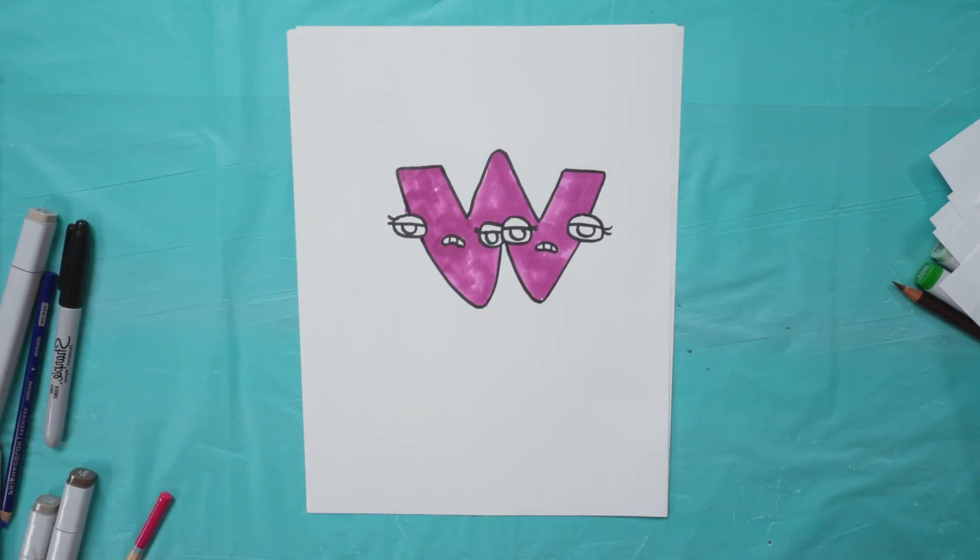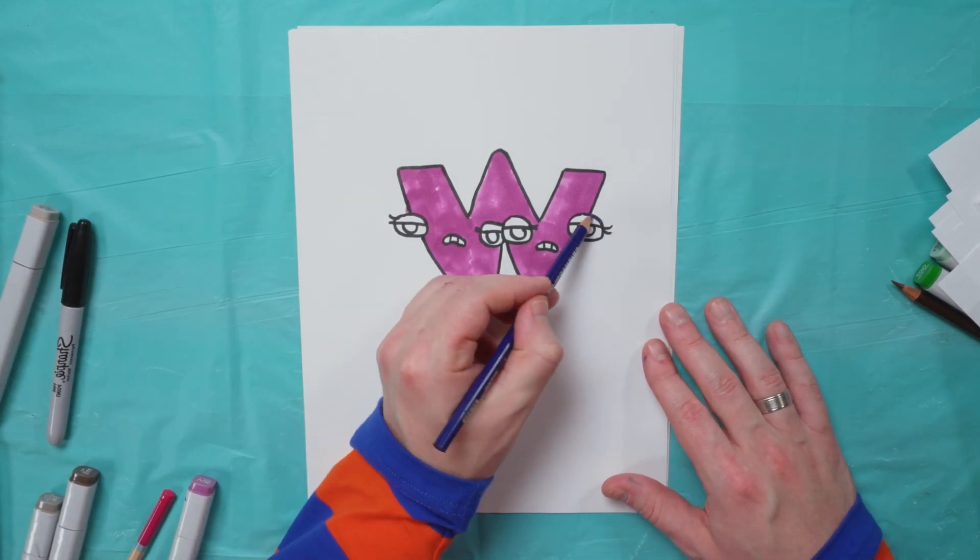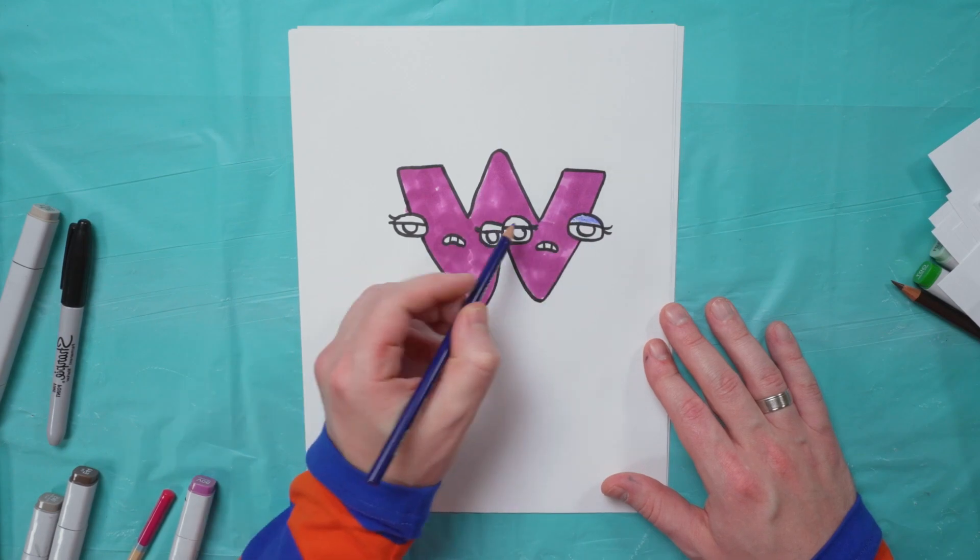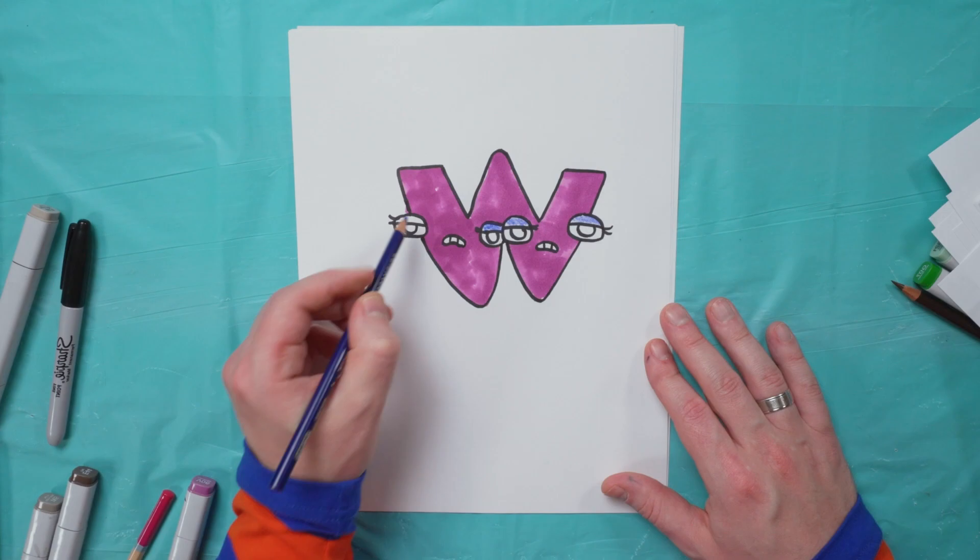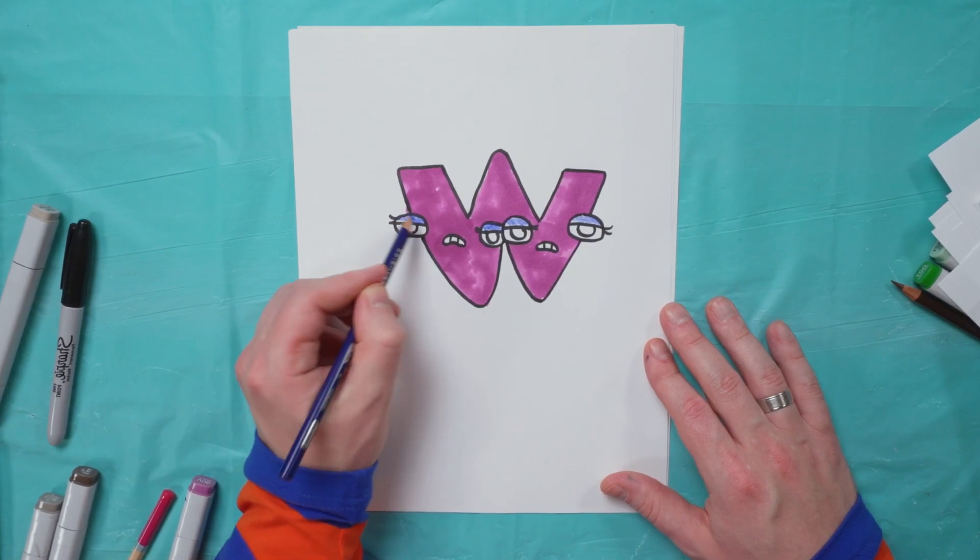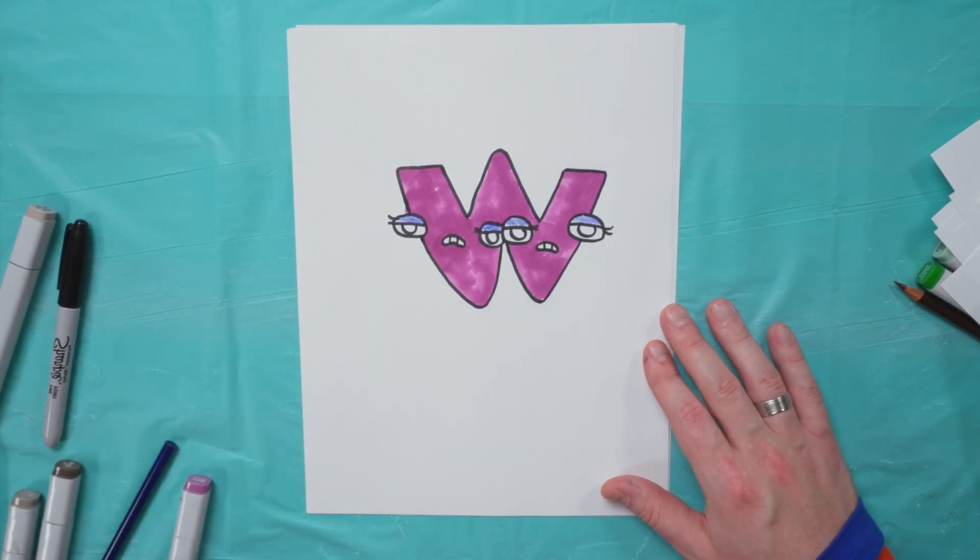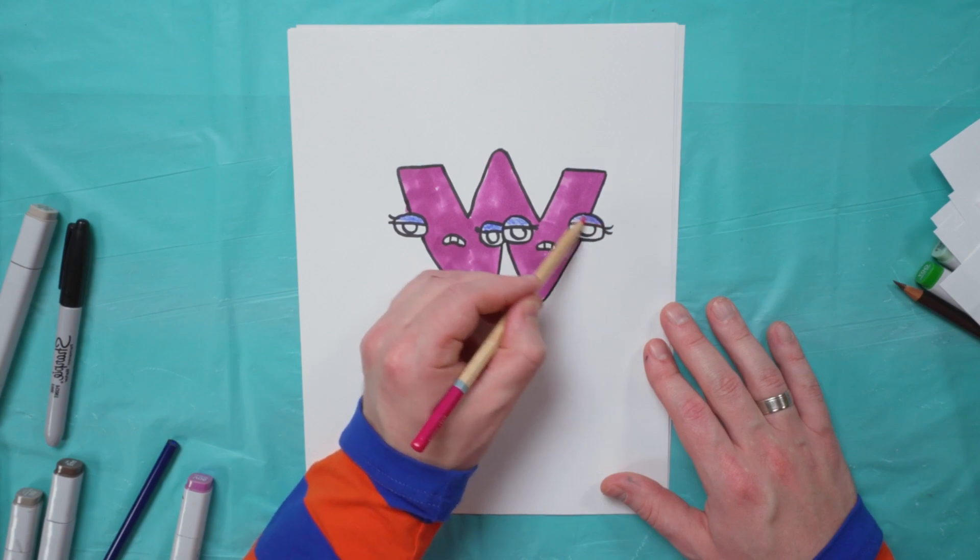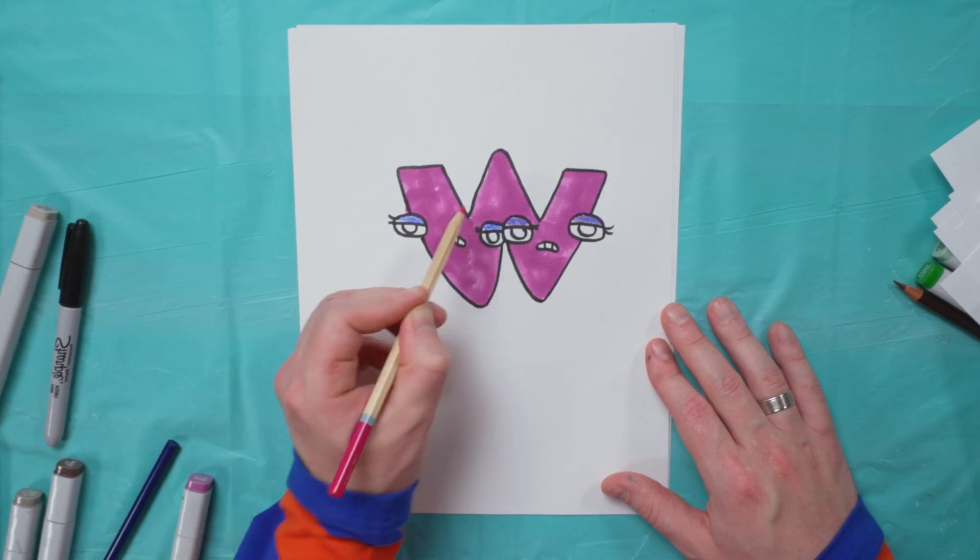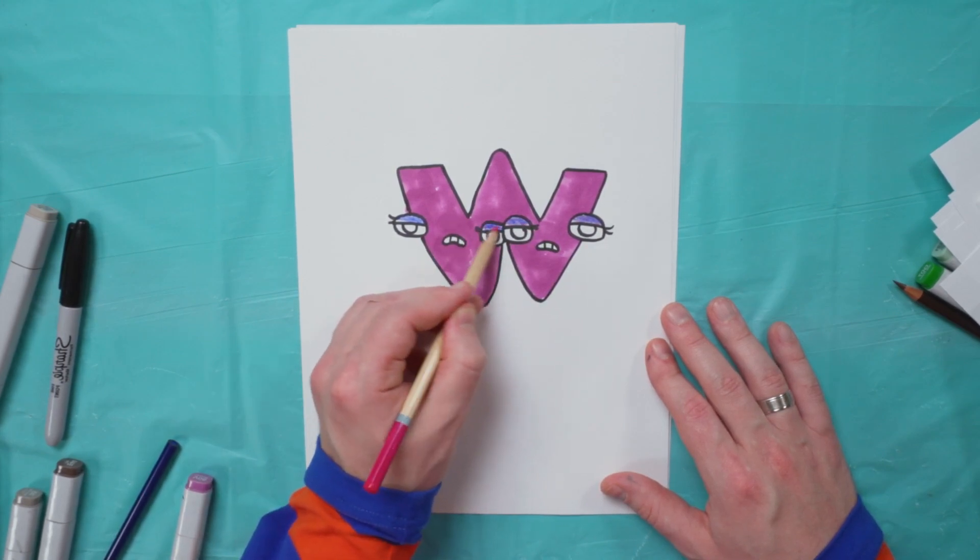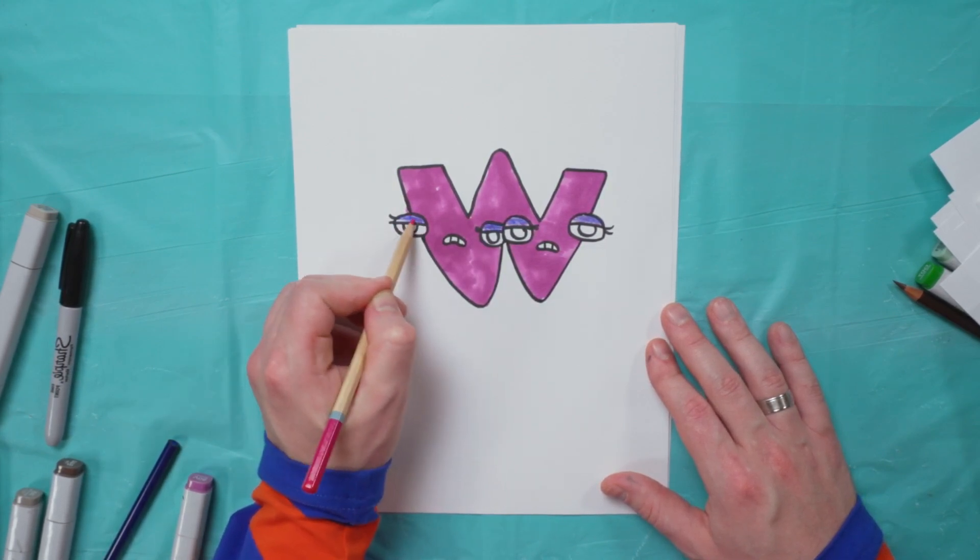Okay, next we're going to do the eyelids. So I'm going to take this blue colored pencil and fill that in, and then do all four. Take this pink colored pencil, kind of blend it in to make it kind of dark purpley.